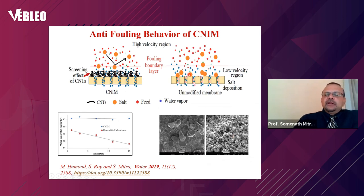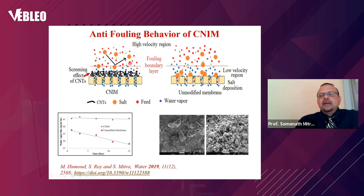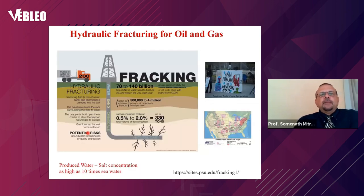Another major problem with membranes is fouling — calcium or other solids in water precipitate and clog the pores. Carbon nanotubes form a screen on the membrane surface that prevents pore clogging. Without nanotubes, large calcium particles form and flux drops dramatically over time. With nanotubes, only small particles appear and flux stays constant. This anti-fouling property is a major advantage for sustained membrane performance.